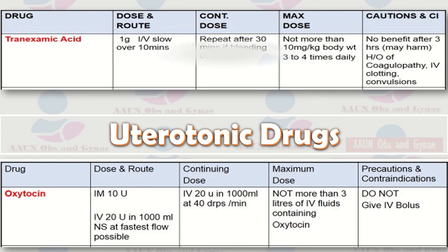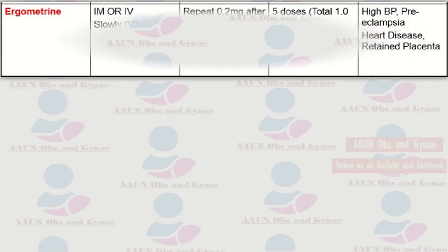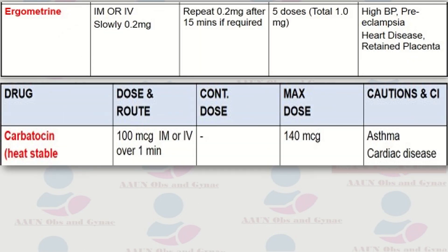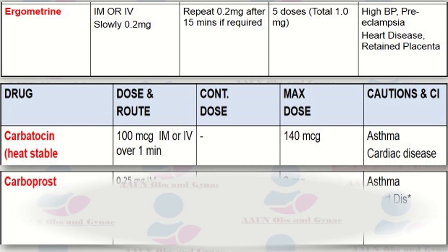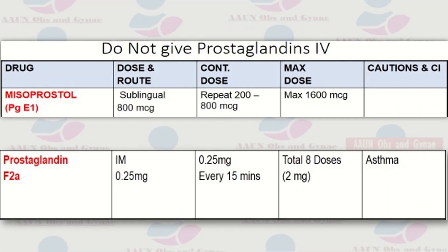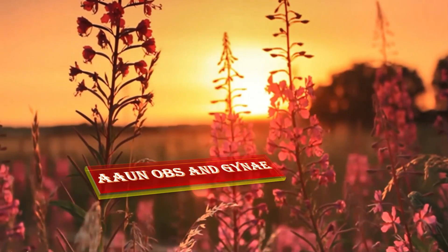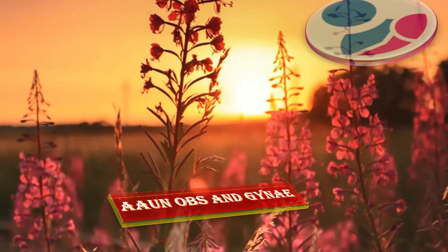The list of uterotonics includes oxytocin, along with tranexamic acid given at a dose of one gram IV slowly over 10 minutes. Other choices include ergometrine IM or IV slow 0.2 milligrams, carbetocin, carboprost, misoprostol, and prostaglandin F2 alpha. Please write your queries in the comment section, subscribe to Obs and Gynae, and follow our Facebook page.